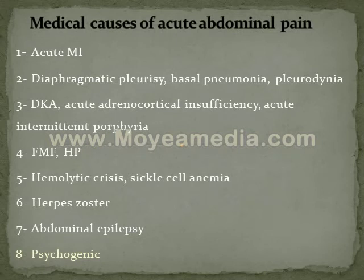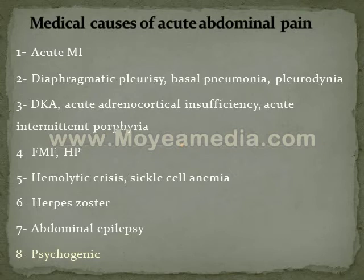Causes of acute abdominal pain may be medical (non-surgical) or surgical. Medical causes of acute abdominal pain include: acute myocardial infarction, diaphragmatic pleurisy, basal pneumonia, diabetic ketoacidosis, familial Mediterranean fever, hemolytic crisis, sickle cell anemia, herpes zoster, abdominal epilepsy, and psychogenic pain.